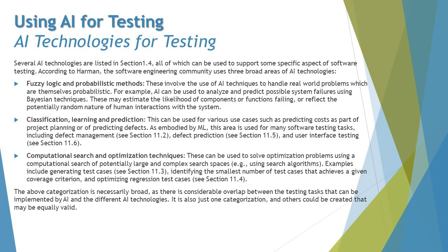To get started, the very first topic we're talking about is AI technologies for testing — what exactly do we have in order to use AI as part of the testing activities. Several AI technologies are listed in the beginning of the chapter itself, like chapter one, section 1.4, all of which can be used to support some specific aspect of software testing.